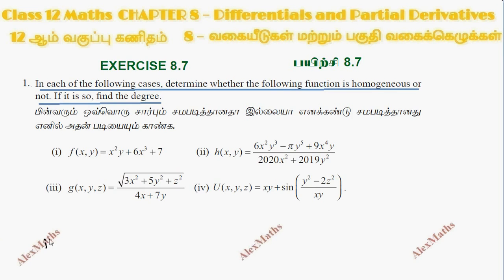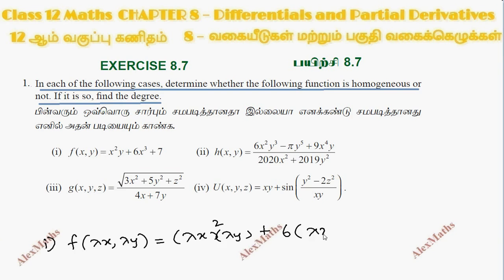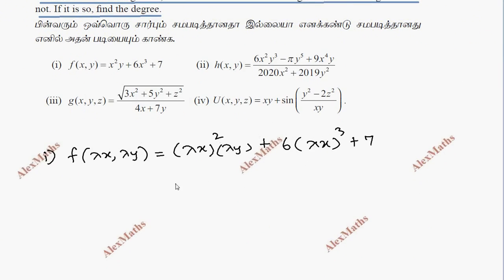First subdivision: f of x, y is equal to f of lambda x, lambda y. Substitute x equal to lambda x and y equal to lambda y. We get plus 6 into lambda x whole cube plus 7. In the first term, lambda squared x squared times lambda y — this gives lambda cube x cube plus 7.